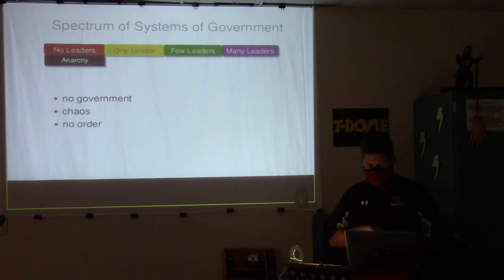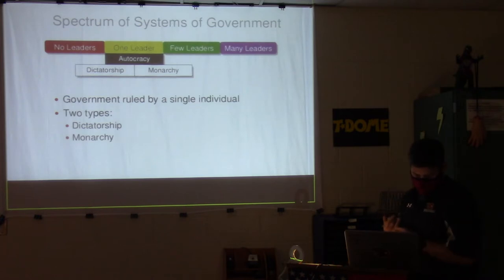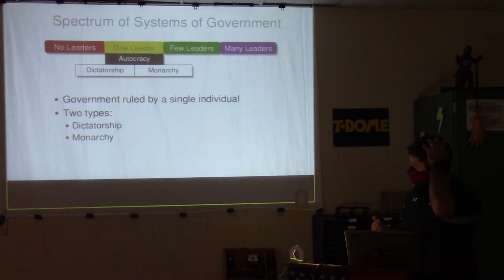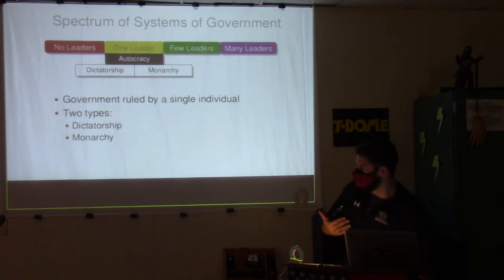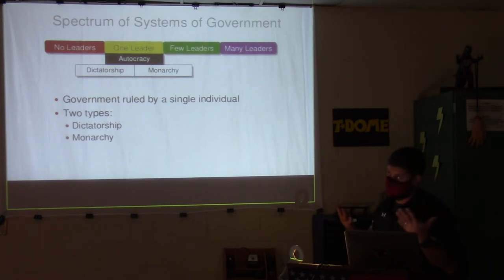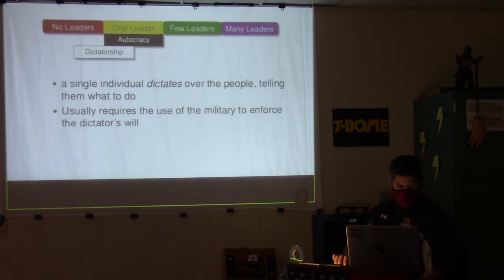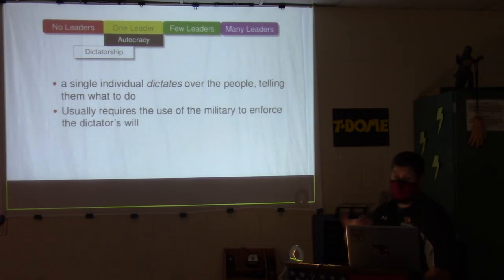Anarchy means no government — chaos, no order. Now, one leader: autocracy. Under this you have dictatorship and monarchy. A dictatorship is ruled by someone who took power by force, or they were voted in and never gave it up. A government ruled by a single individual — a dictator dictates over the people and usually requires the use of military to enforce the dictator's will.